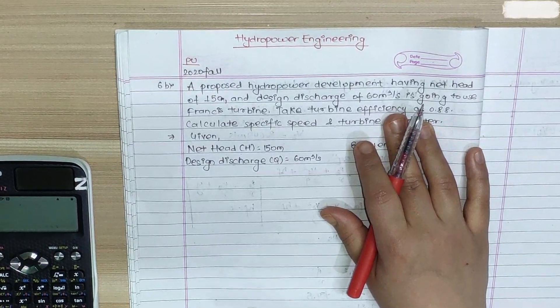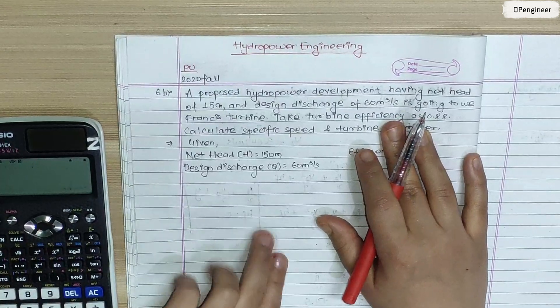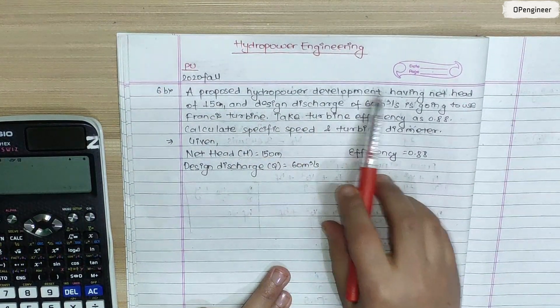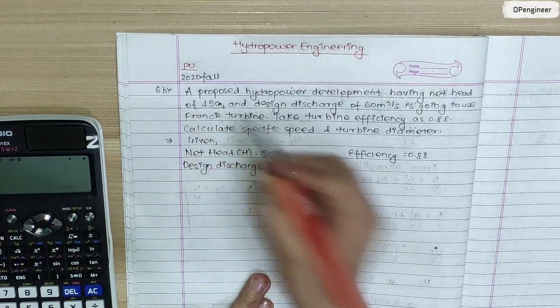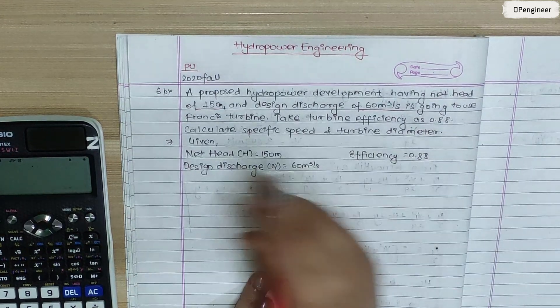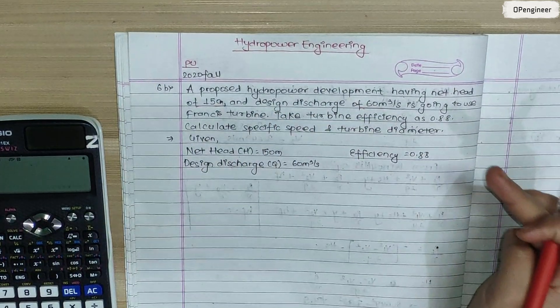Today we are going to talk about hydropower engineering. The proposed hydropower development having net head of 150 meters and design discharge of 60 cubic meters per second is going to use Francis turbine.